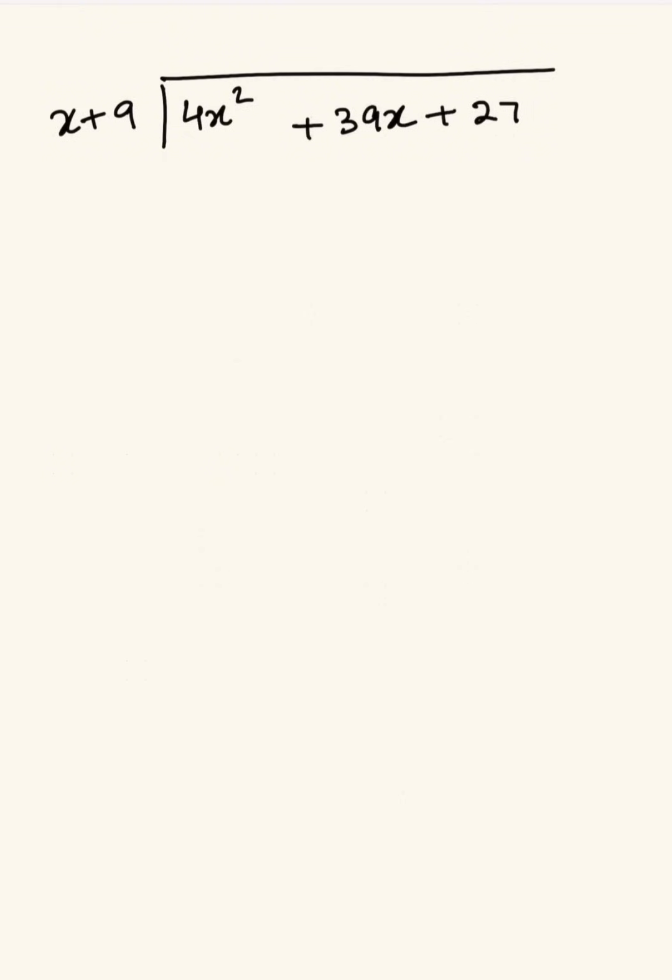4x squared plus 39x plus 27 divided by x plus 9. The first thing we want to do is check if this is written in standard form. We have a power of 2 followed by the power of 1 and a constant. So yes, this is in standard form, and then you want to quickly check that none of the terms are missing.